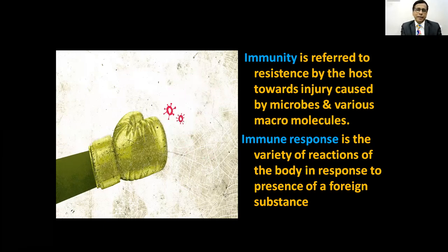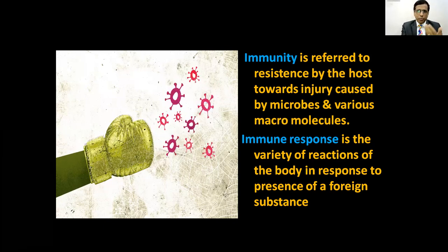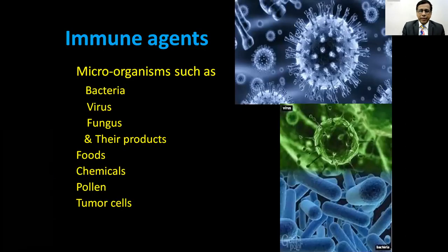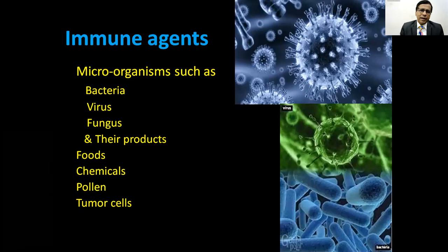This is an antibody, and the foreign agent is called an antigen. What are immune agents? They are microorganisms — bacteria, virus, fungus. They are also food particles, chemicals, pollen, and tumor cells. These are all immune agents found in the body.